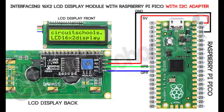Now let's look at the circuit diagram. With the help of it, we can properly connect all of the required components. As you can see, there are only four connecting wires. The LCD module VCC and GND are powered from VBUS pin 40 and GND pin 38 of the Raspberry Pi Pico board, respectively.